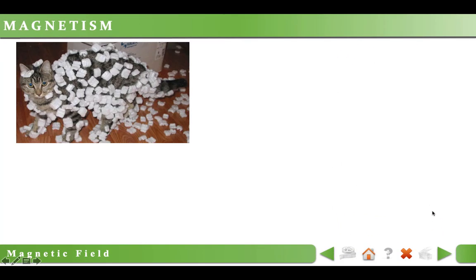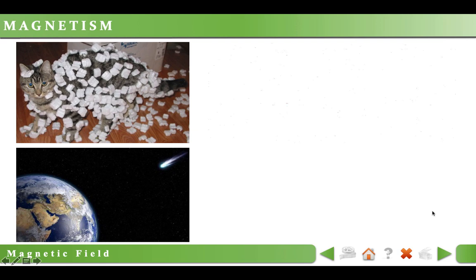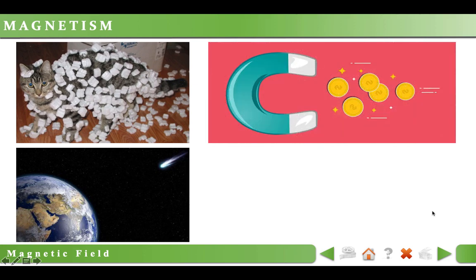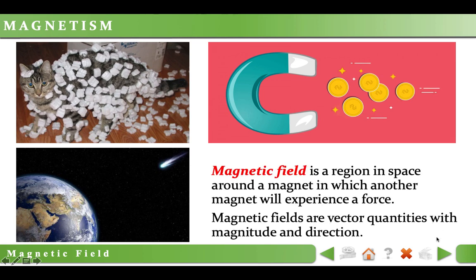When charged particles approach each other, there will be either attractive or repulsive force between them due to electric fields. Similarly, if any magnetic substance is held close to another magnetic substance, they will attract or repel each other. This happens because of magnetic field around them. Magnetic field is a region in space around a magnetic substance in which another magnetic substance will experience a force.